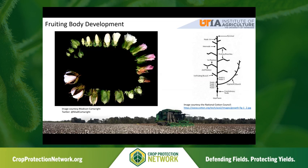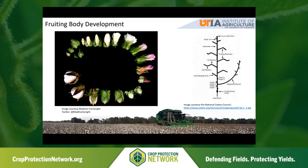Within two or three days of pinhead square, we actually reach matchhead square, which is much easier to identify. We're going to still be looking in that sixth to seventh node range on the plant, but they are larger. About 22 days after that first square is noted on the plant, that square will have moved to be a white flower. Occasionally you'll hear people talk about candles — a candle would be just a few days prior, right before the petals have unfurled and the flower has opened. The day after the flower opens, it'll actually turn pink. Within a few days after that, it's going to dry up and turn into a bloom tag. At that point, you will really be able to see that boll below that bloom tag begin to grow very rapidly.